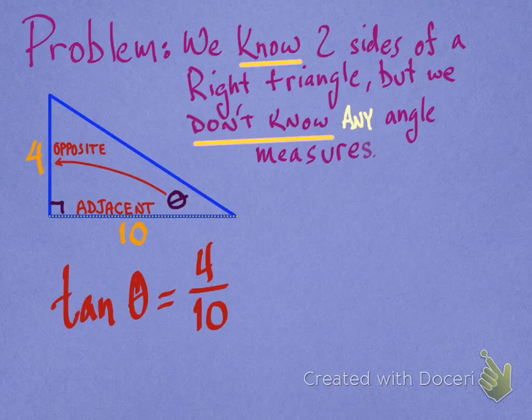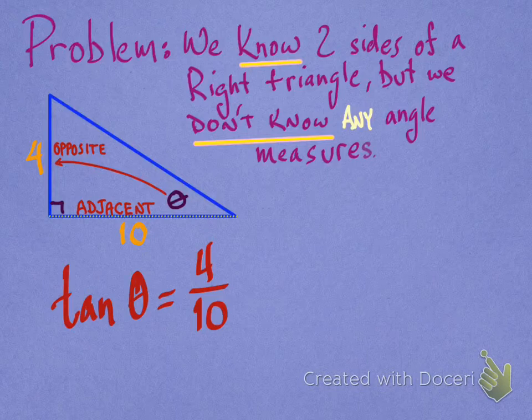Okay, well, that's a good equation, but it doesn't really tell me what the angle measure is. It just tells me something I already know, that the tangent of theta is 4 over 10.